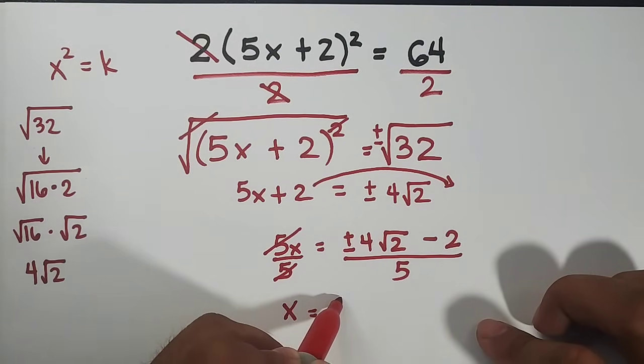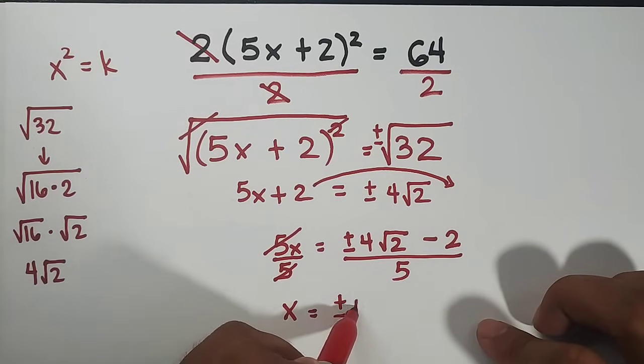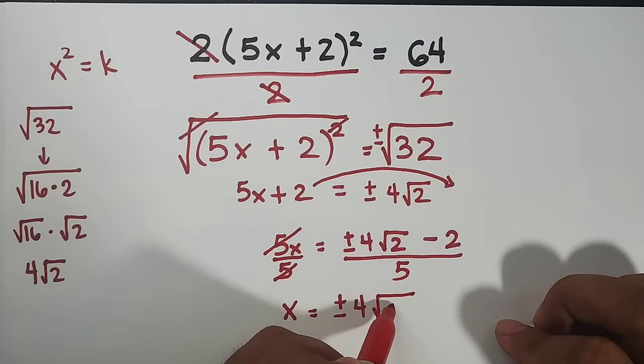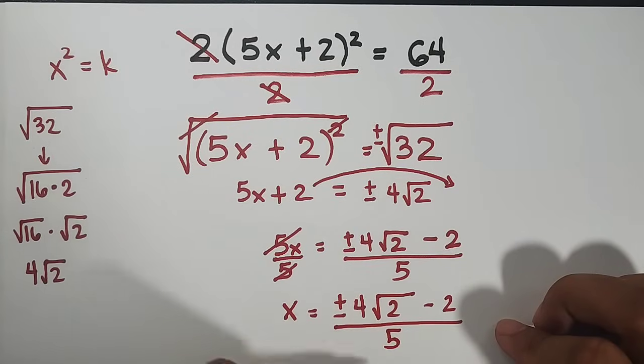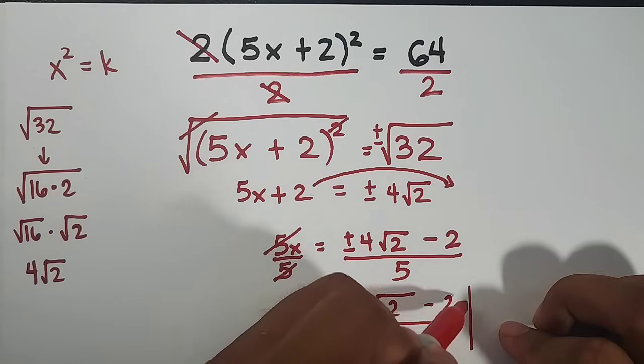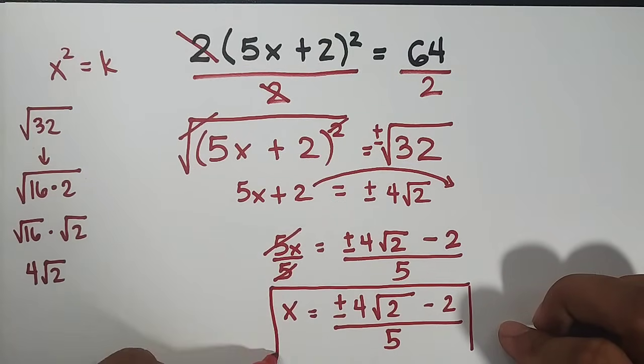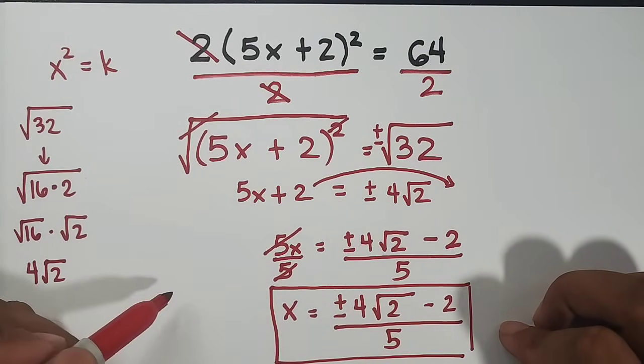Your x is equal to positive, negative 4, square root of 2, minus 2 over 5. Right now, we can declare that this part or this is the answer or these are the solutions.